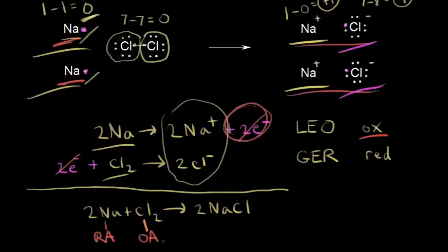Students sometimes find this confusing because sodium is itself being oxidized, yet it is the reducing agent; and chlorine itself is being reduced, yet it is the oxidizing agent. But when you think about what's happening with the electrons, the electrons lost by sodium are the same electrons gained by chlorine — that makes sodium the reducing agent and simultaneously allows chlorine to oxidize sodium. Assign your oxidation states, think about the definitions, and you can assign oxidizing and reducing agents.